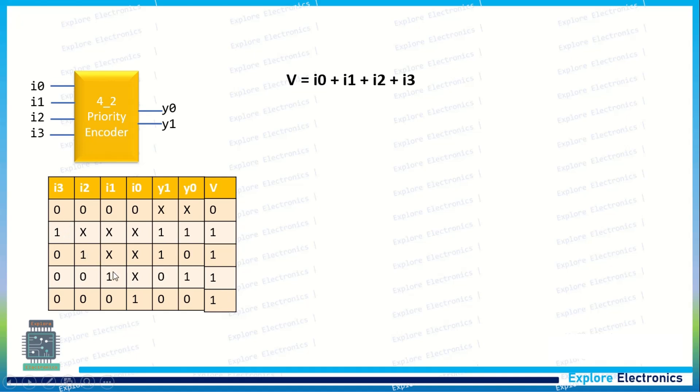When i3 is equal to 1, i2 is equal to 1, i0 is equal to 1, and i1 is equal to 1. When all these things are 1, the valid signal is 1. That's why i0 + i1 + i2 + i3 is the expression for V.